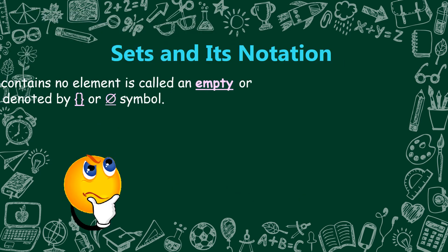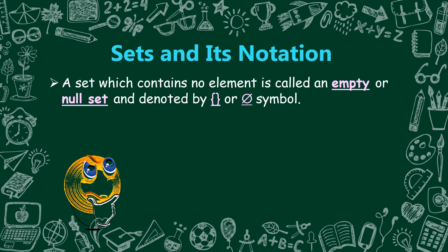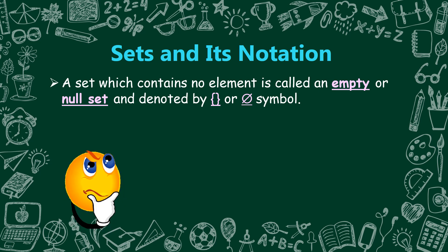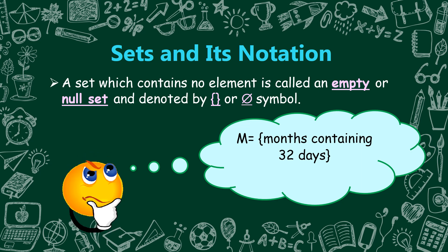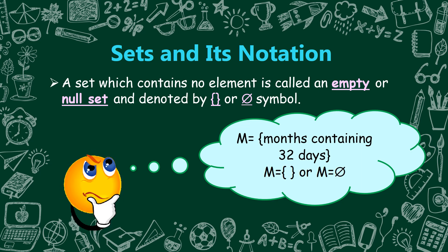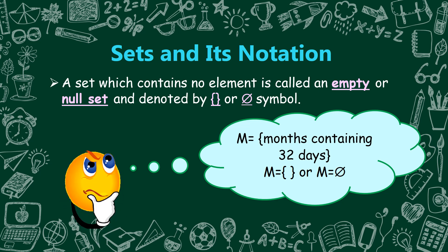Another thing to learn: a set which contains no element is called an empty or null set, and is denoted by an empty bracket or the null set symbol. Example: M is equal to months containing 32 days. Think — there is no month with 32 days; the maximum is 31 days. So, if we are going to write this in symbols, M is equal to an empty bracket, or M is equal to the null set symbol. When we say empty set or null set, it means the set has no element.